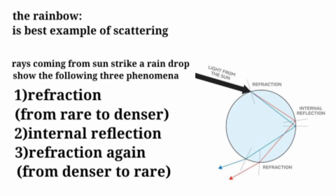The rainbow is the best example of scattering. Here is a diagram showing rays coming from sun strike a rain drop, showing the following three phenomena.